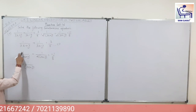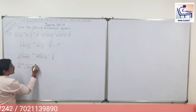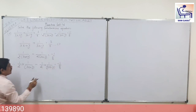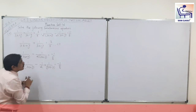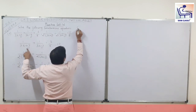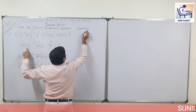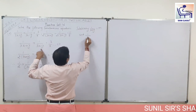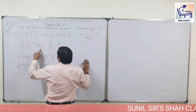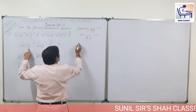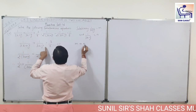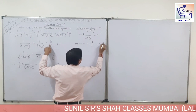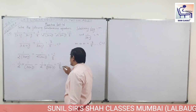Now we substitute: 1 upon (3x plus y) equals M and 1 upon (3x minus y) equals N. From the first equation, M plus N is equal to 3 upon 4. This is equation number 3. From the second equation: 1 upon 2 into M minus 1 upon 2 into N is equal to minus 1 upon 8. This gives M upon 2 minus N upon 2 is equal to minus 1 upon 8. This is equation number 4.